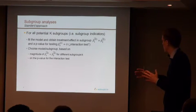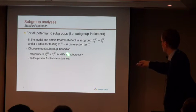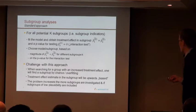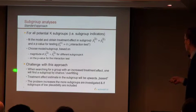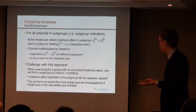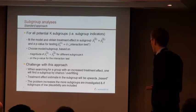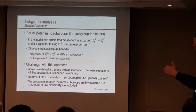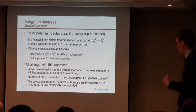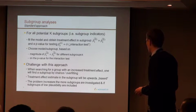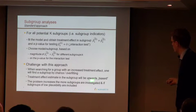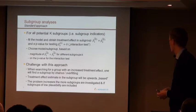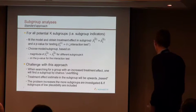Everyone in this room knows that the challenge with this approach is that when you search for a group with an increased treatment effect, at some point you will find something — but you will find something by chance. You might view it as overfitting: if you try multiple structures, at some point one will fit your observed data, but you're really fitting noise, not an underlying structure. Due to that, the treatment effect estimate will typically be upwards biased, and the problem gets worse the more subgroups you look at, and if you include subgroups of low plausibility.